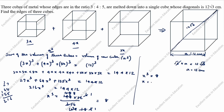x is equal to the cube root of 8. We can write 8 as 2 into 2 into 2, which is 2 cubed. Taking the cube root, x is equal to 2 centimeters.